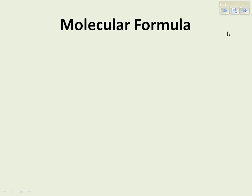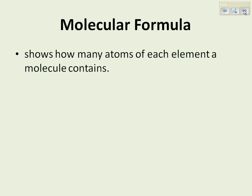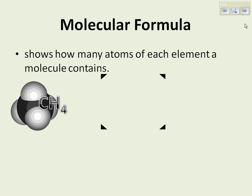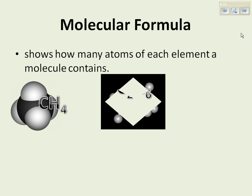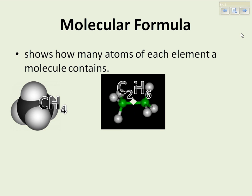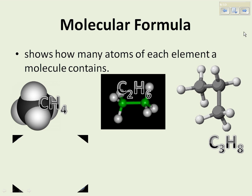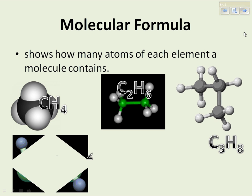A molecular formula shows how many atoms of each element a molecule contains, and it's not always a low whole number ratio. For example, we have methane, CH4. The next molecule is C2H6 — notice it's not the lowest whole number ratio, but this molecule is ethane. Our next one is C3H8, which is propane.